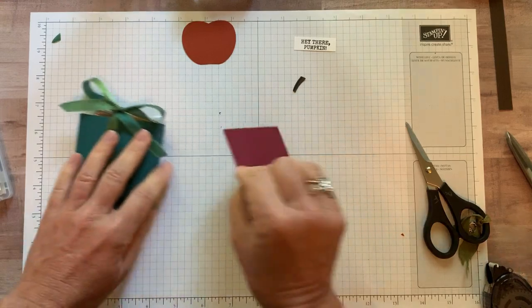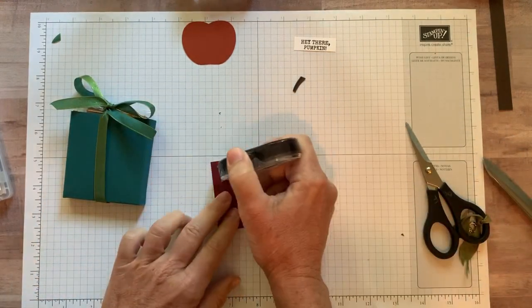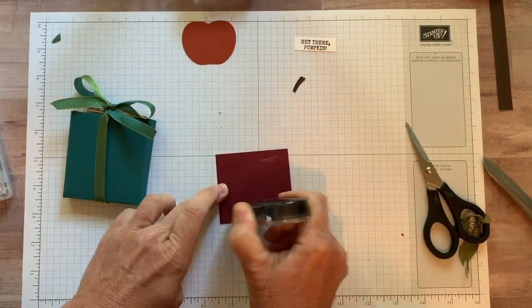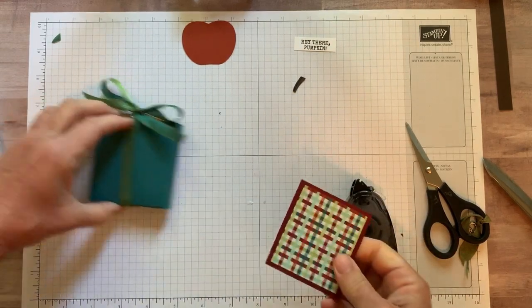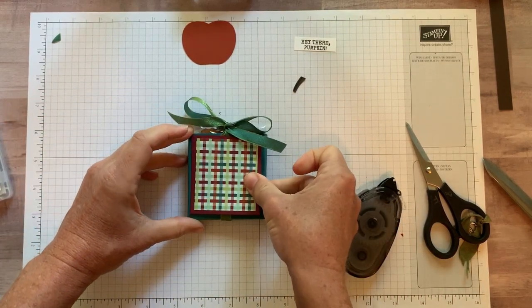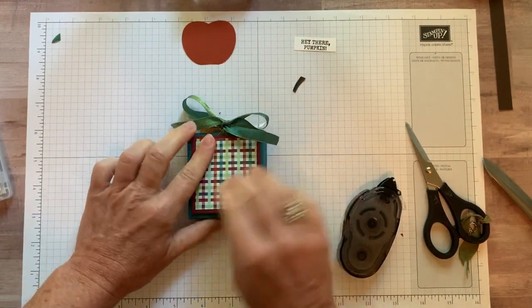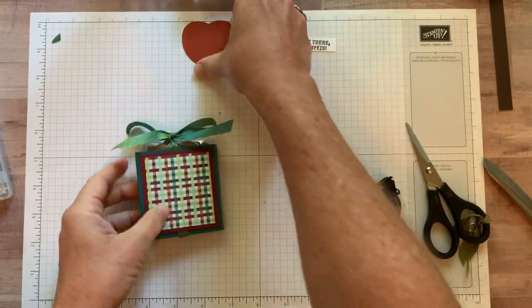Now we can go ahead and put this strip or this piece of again, Merry Merlot and come together designer series paper can pop right on there. And that kind of helps hold the ribbon in place.